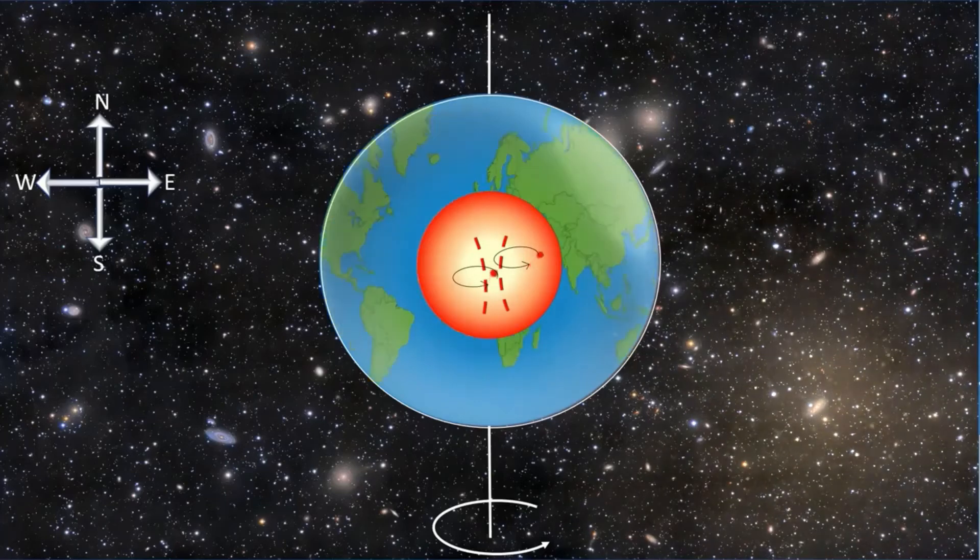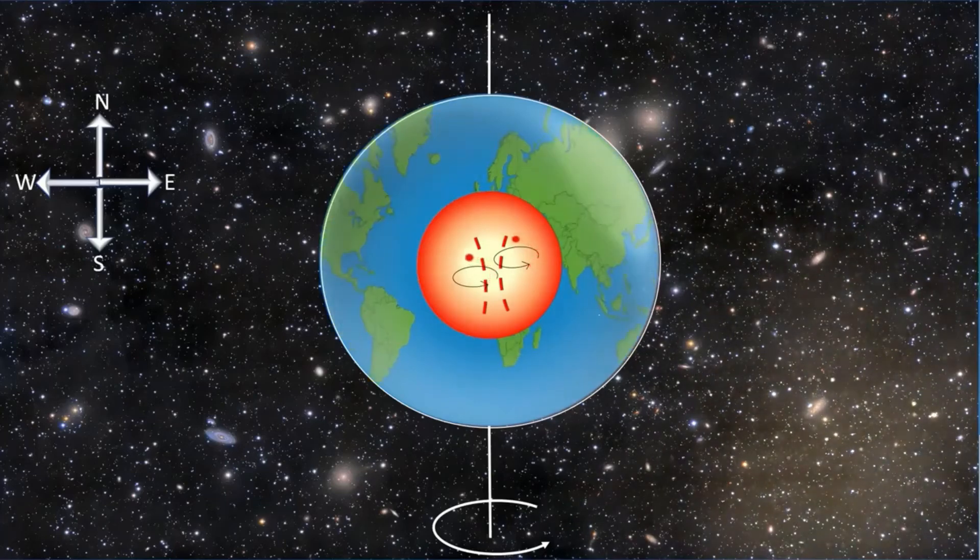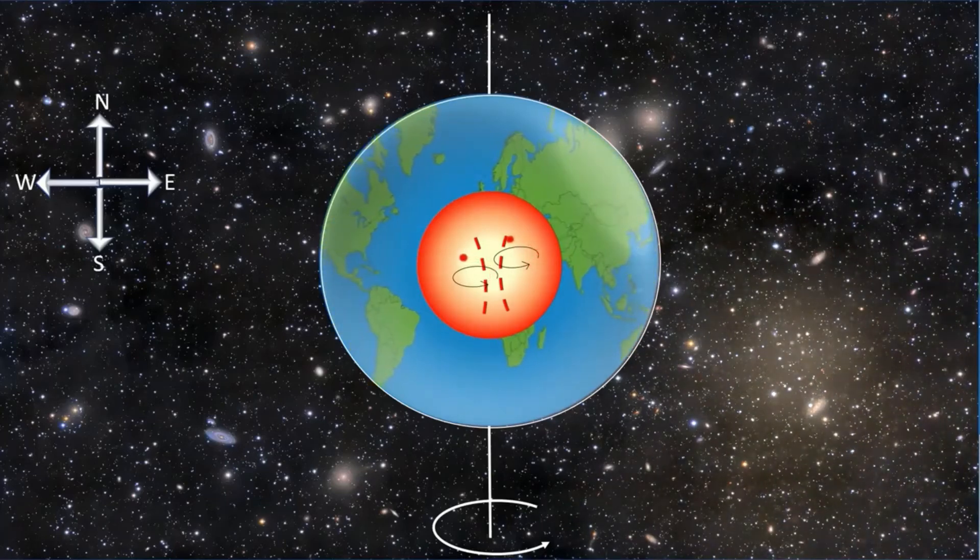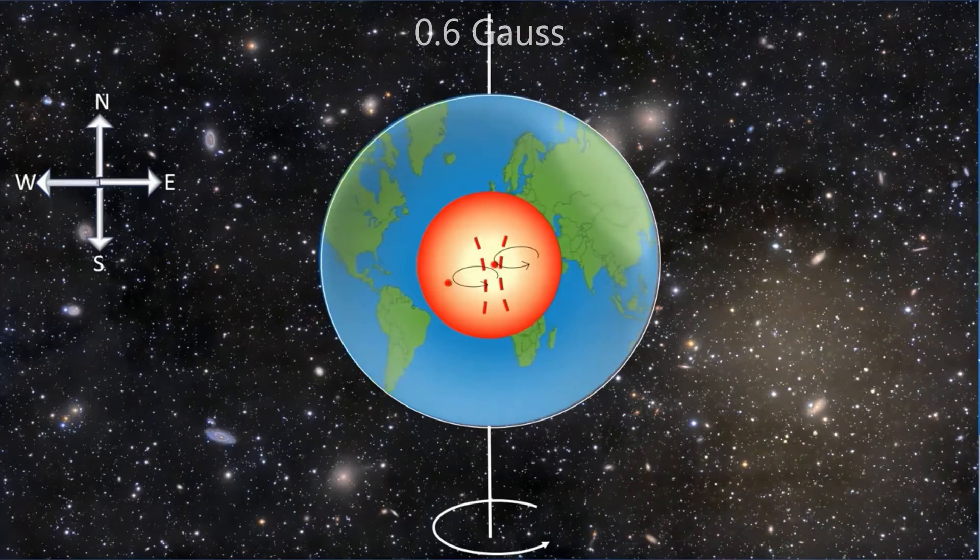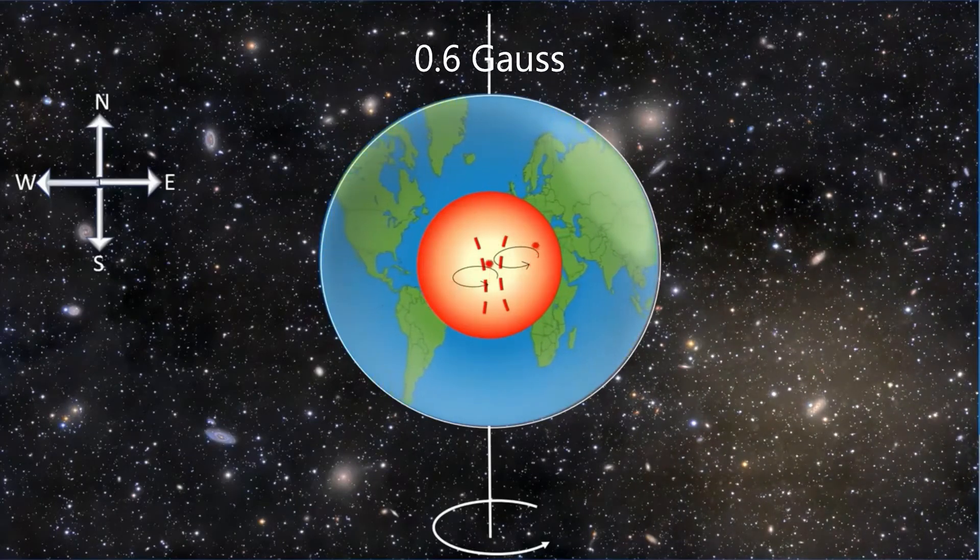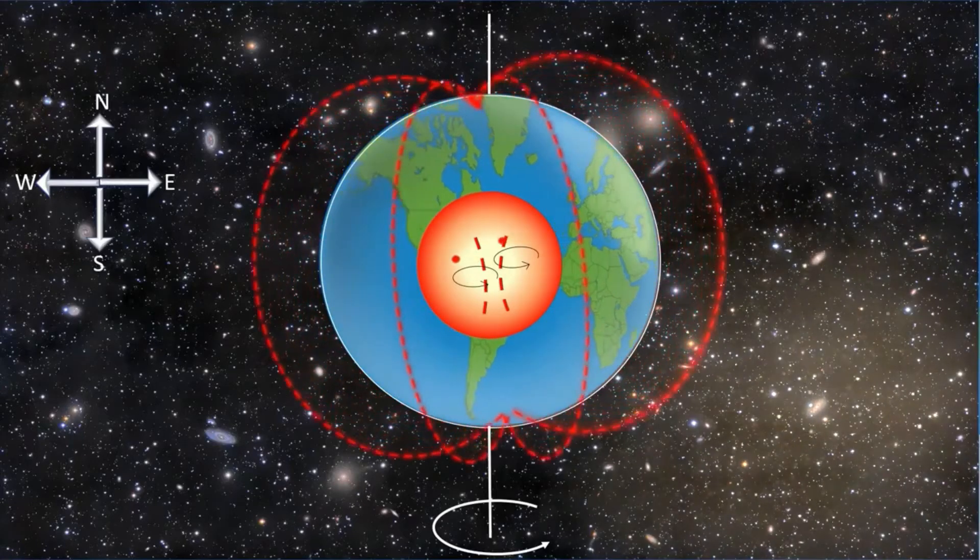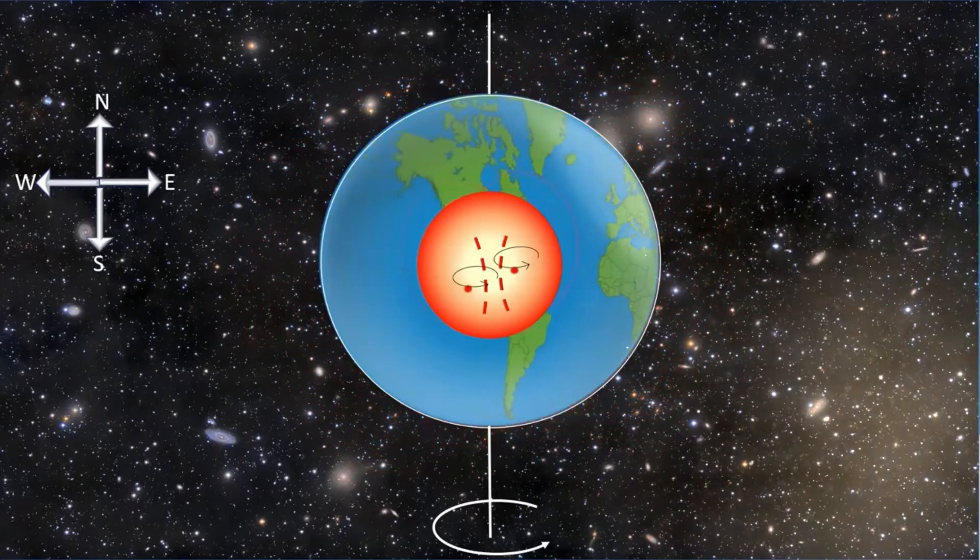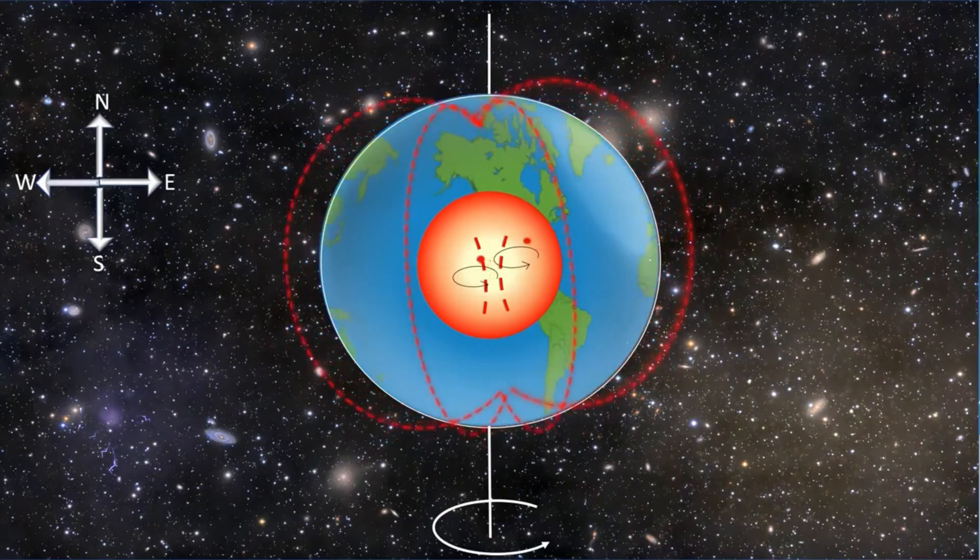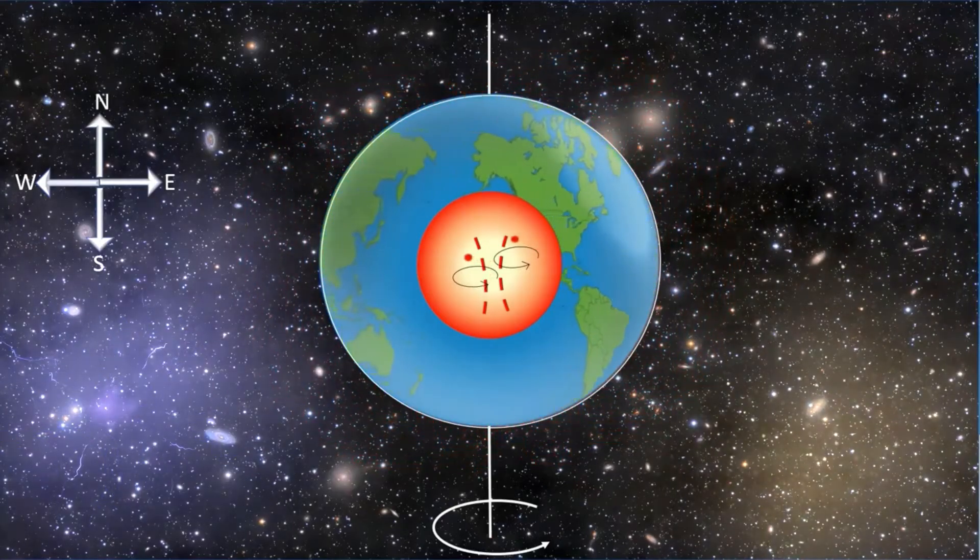The strength of the field at the Earth's magnetic equator is 30 microtesla, 0.3 gauss, and over 60 microtesla, 0.6 gauss, around the magnetic poles. The average magnetic field strength in the Earth's outer core is 25 gauss, 50 times stronger than the magnetic field at the surface.